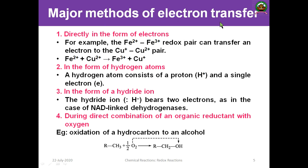What are the major methods for the transfer of electrons during a redox reaction? There are four important methods: directly in the form of electrons, transfer in the form of a hydrogen atom, transfer in the form of a hydride ion, and transfer during the direct combination of an organic reductant with oxygen. These are the four main mechanisms of electron transfer.